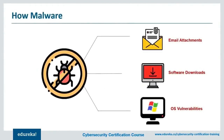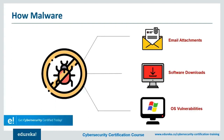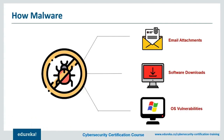Viruses, like their biological namesakes, attach themselves to clean files and infect other clean files. They can spread uncontrollably, damaging a system's core functionality and deleting or corrupting files, usually appearing as executable files downloaded from the internet. Trojans disguise themselves as legitimate software and create backdoors in your security to let other malware in. Worms infect entire networks of devices by using the network's interfaces, using each infected machine to infect more. Botnets are networks of infected computers made to work together under the control of an attacker. You can encounter malware through OS vulnerabilities, downloading illegitimate software, or compromised email attachments.